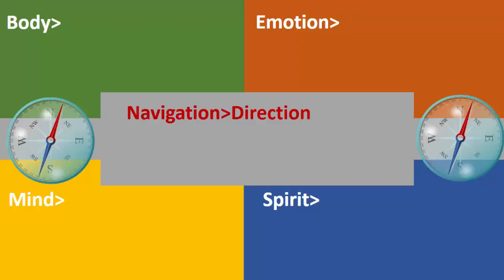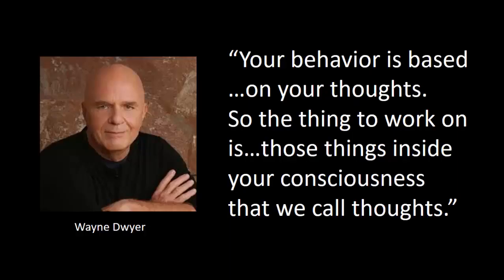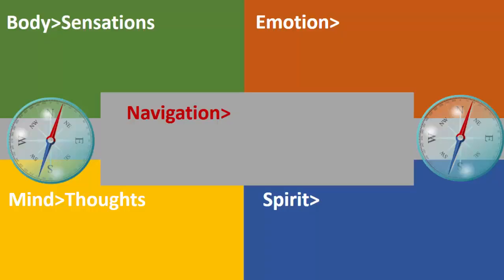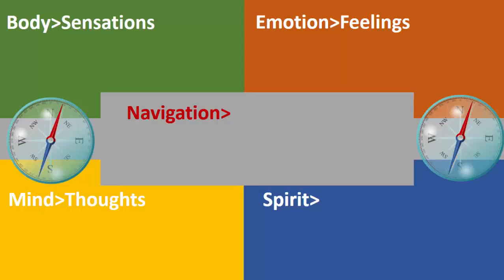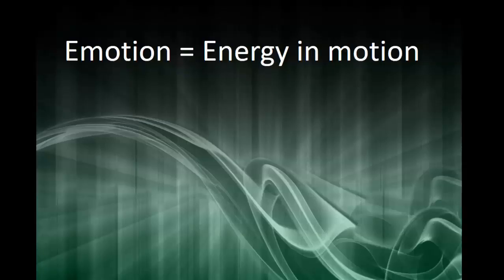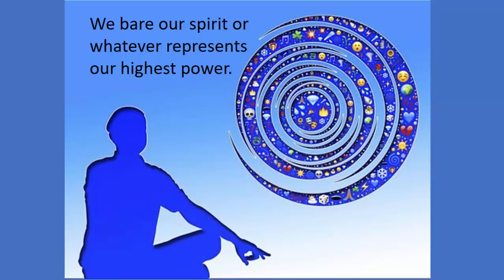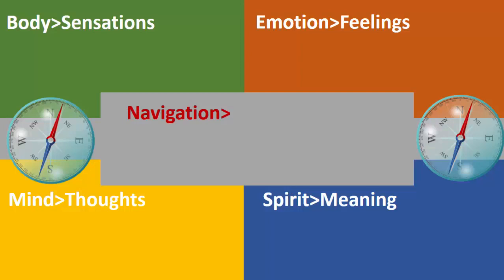But where did it come from and what does it do? We start with the mind and your thoughts. As the late Wayne Dyer would say, your behavior is based on your thoughts, so the thing to work on is those things inside your consciousness that we call thoughts. From the mind we go to the body and your sensations — the literal physical sensations of our body that we bring into our awareness. And from the body we go to the emotions and feel the energy that moves us — really energy in motion. To that we bear our spirit, or whatever represents our highest power, and find meaningful answers to the deeper questions about life and its purposes. When we align mind with body with emotion and spirit, we position ourselves to navigate the reality of our life and consciously choose a wise direction.